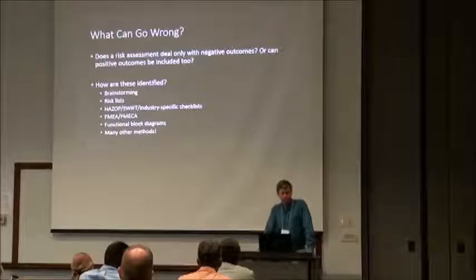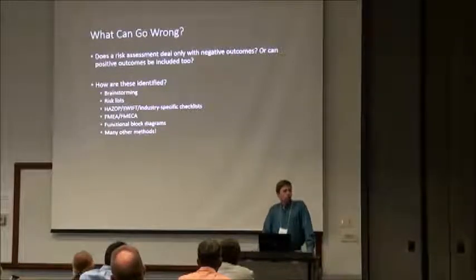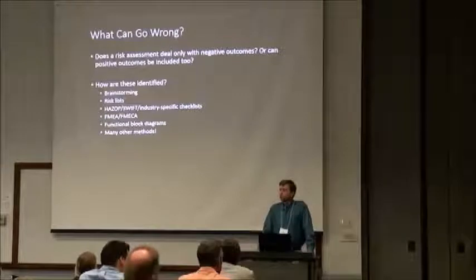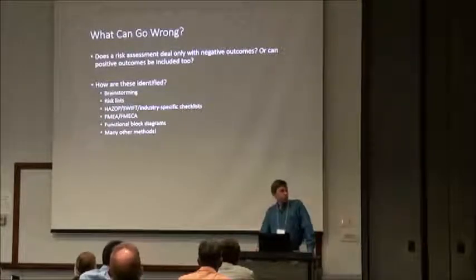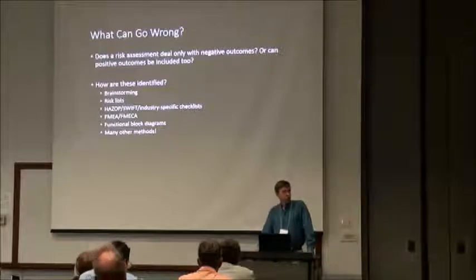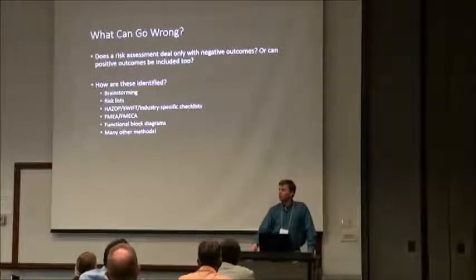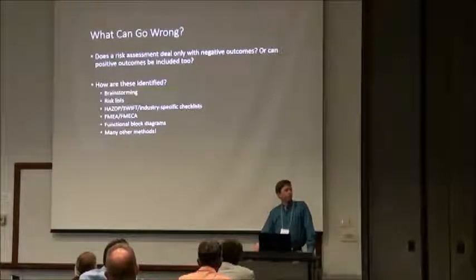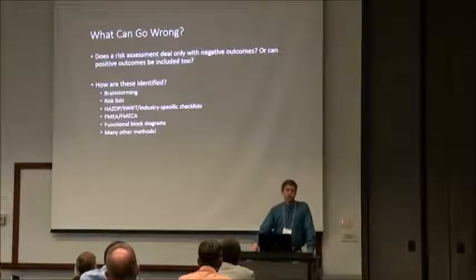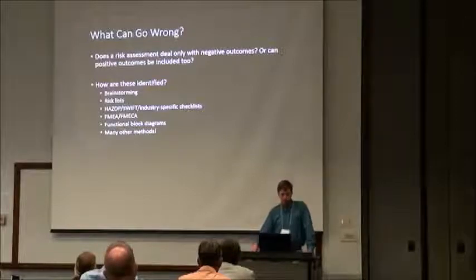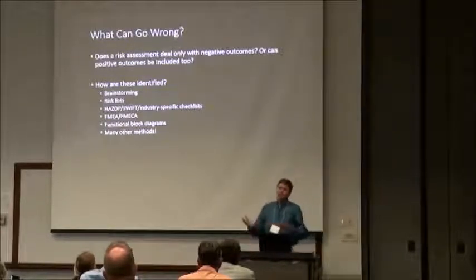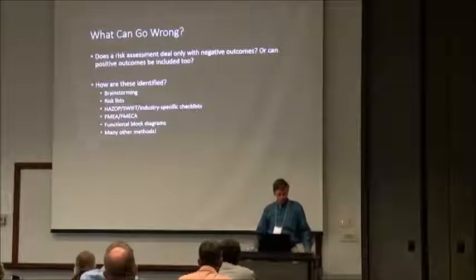Does a risk assessment have to deal only with negative outcomes, or can we also think about positive outcomes? The Kaplan and Gehrig framework says it's about what can go wrong, but now we're arguing we also need to think about positive things. If we're thinking about urban trees, we're not just asking what's all the bad stuff that could happen — we also need to ask what are the benefits of these trees and how do we balance those costs and benefits.